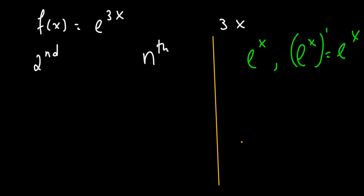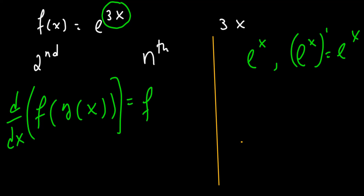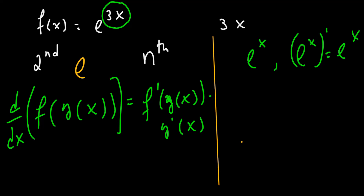We have to use the chain rule because in this case the exponent is 3x. The chain rule says: if we have the composition of two functions f and g, the derivative of this composition means the outside function is differentiated at the inside function, times the derivative of the inside function. In our given function, e^x is the outside function and 3x is the inside function.